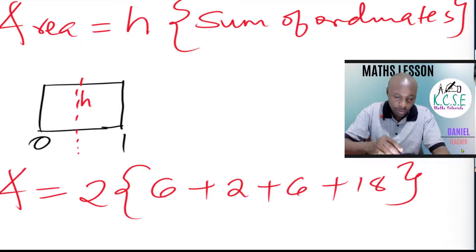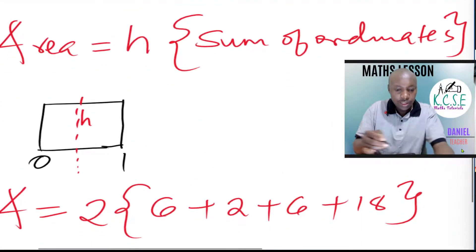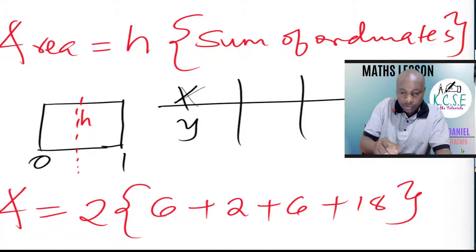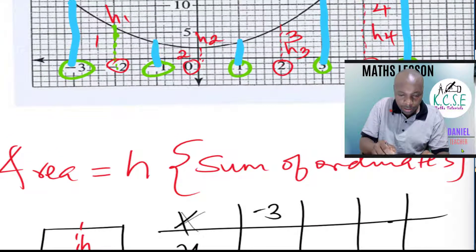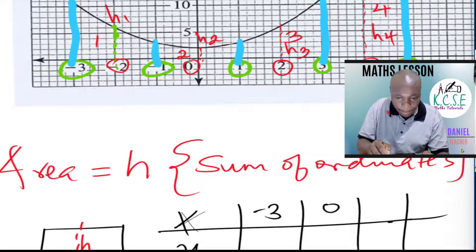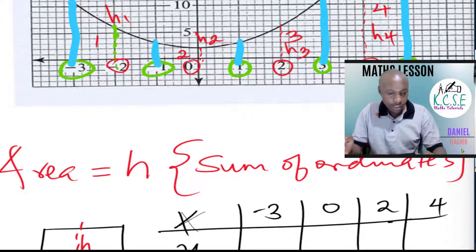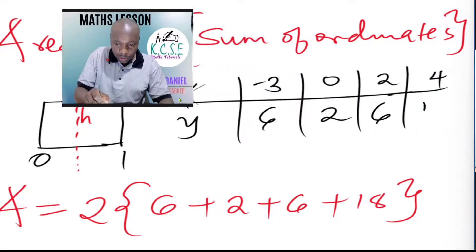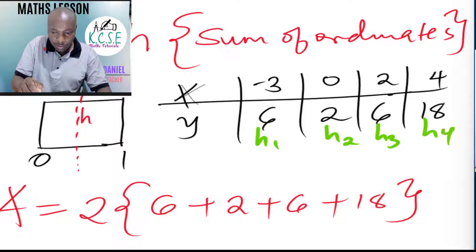These are four ordinates — four heights: height one, height two, height three, height four. Alternatively, you can create a table with x values negative two, zero, two, four, and the corresponding y values read from the curve: six, two, six, and eighteen. These are the four ordinates.